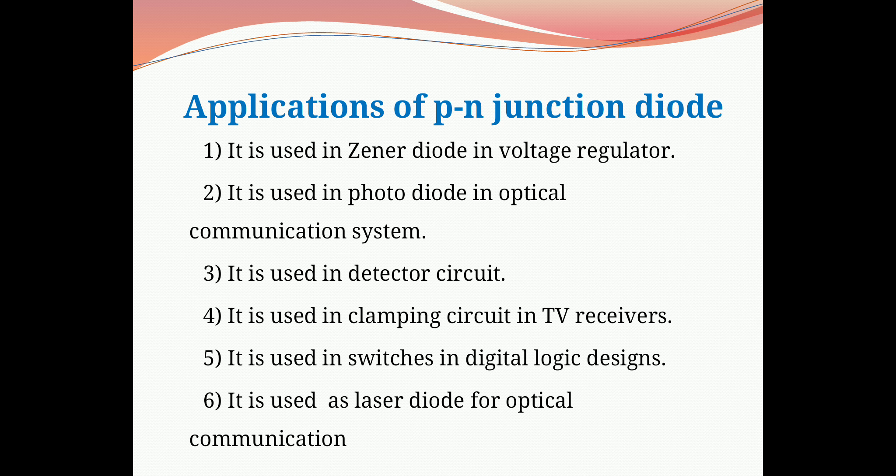The applications of PN junction diode are: first, it is used in Zener diode in voltage regulators; second, it is used in photodiode in optical communication systems; third, it is used in detector circuits; fourth, it is used in clamping circuits in TV receivers; fifth, it is used in switches in digital logic designs; and sixth, it is used as a laser diode for optical communication.